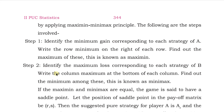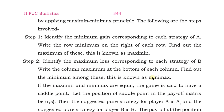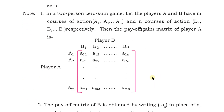Step two: identify the maximum loss corresponding to each strategy of player B, write the column maximum at the bottom of each column, then find out the minimum among these — this is known as the minimax. You write the minimum of the maximums. For example, if numbers in a column include nine, that means A has gained nine points from player B — that is the maximum that player B has lost to A when applying strategy B1.